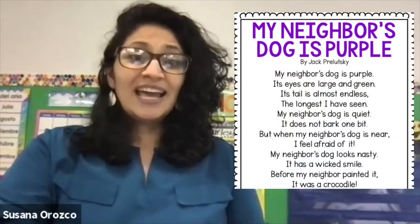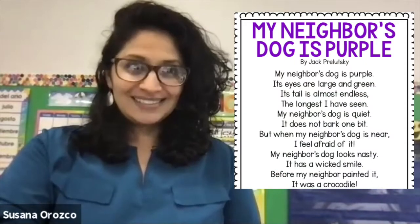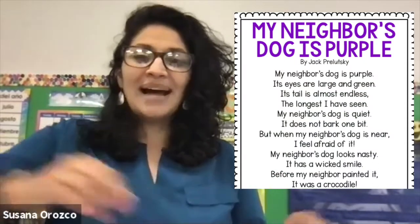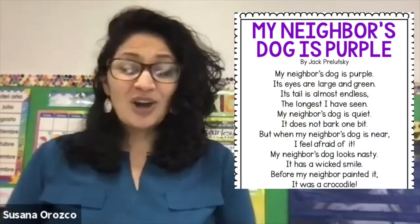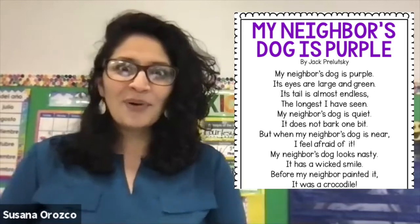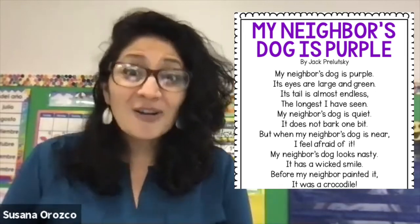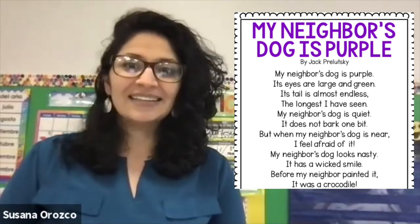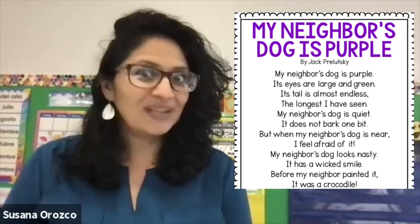All right, friends, I'm going to move on to poem number two. Take your time and your pace. This poem is called "My Neighbor's Dog is Purple," also by Jack Prelutsky. He's a great poet.